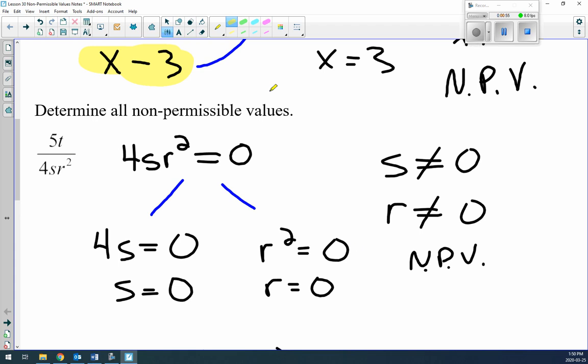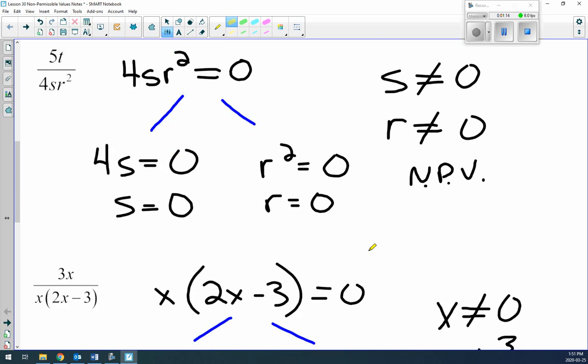All right, look at this one. Determine all non-permissible values. We don't care about the 5t in the numerator. We only care about the 4s and the r². So 4s equals zero means s equals zero, and r² equals zero means r equals zero. So s cannot equal zero and r cannot equal zero. We have two non-permissible values.